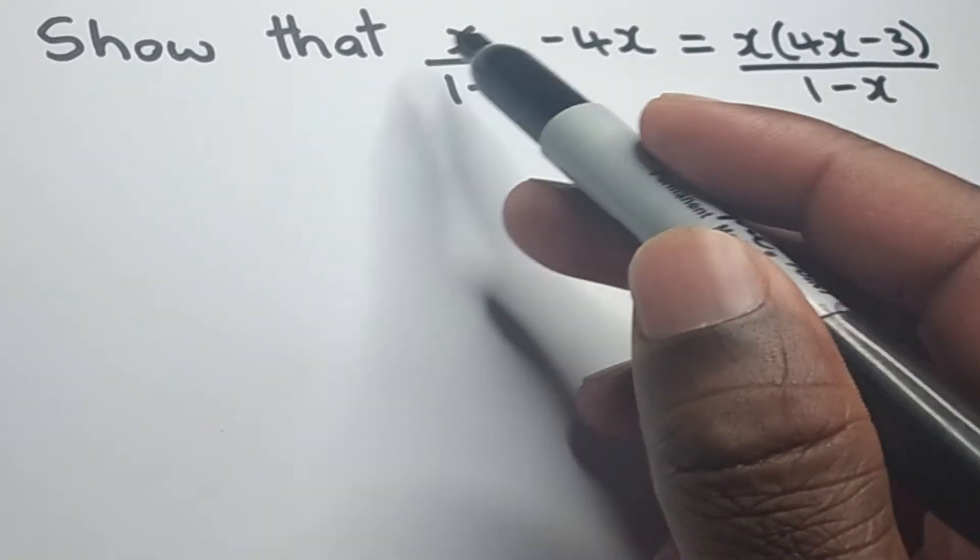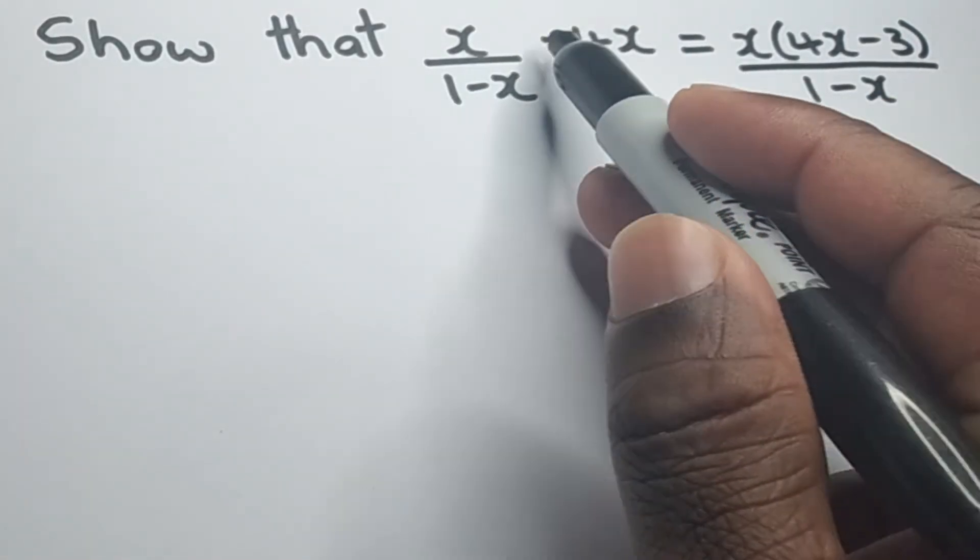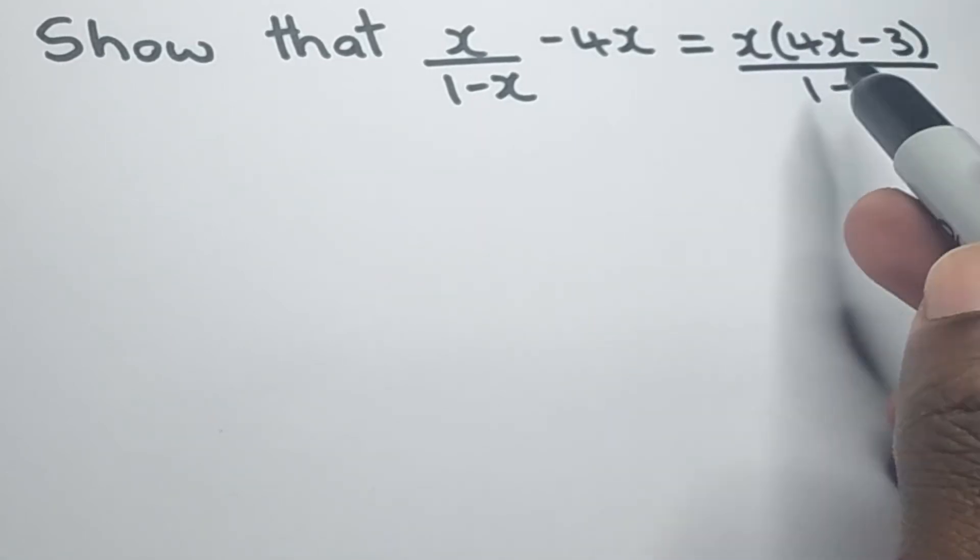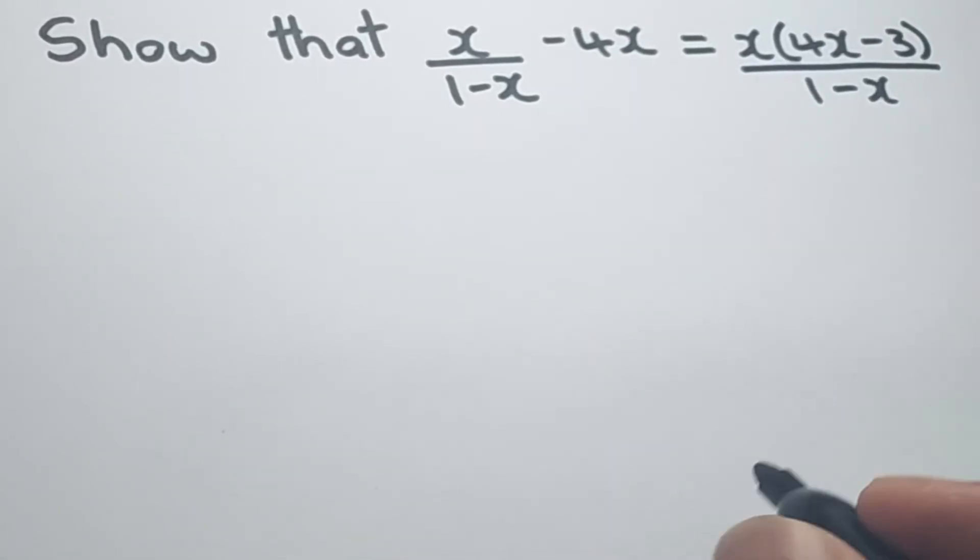And they asked us to show that x over 1-x minus 4x is equal to x times (4x-3) in bracket all over 1-x.